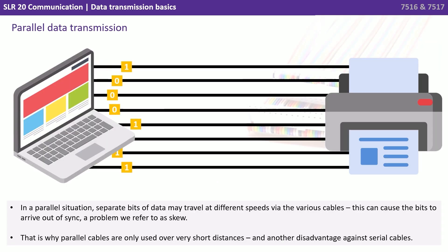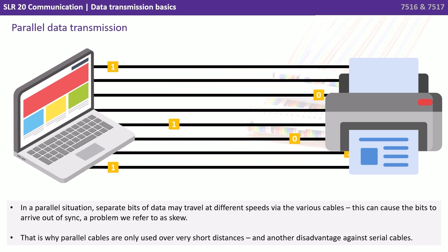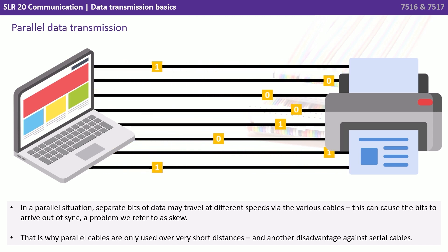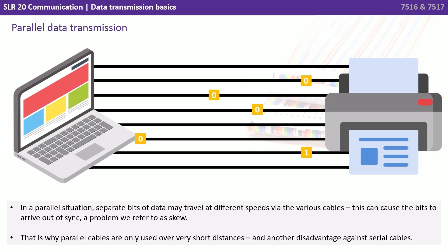In a parallel situation, separate bits of data may travel at different speeds via the various cables. This can cause the bits to arrive out of sync, a problem referred to as skew. That is why parallel cables are only used over very short distances, and it's another disadvantage against serial cables.